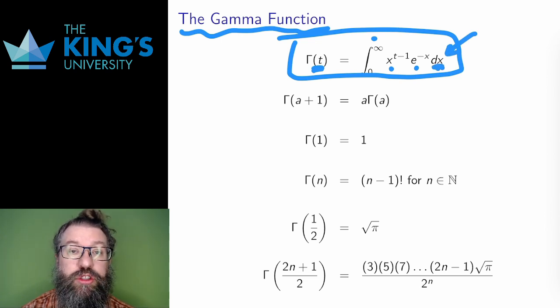The exponential decay ensures that this integral will converge regardless of t, but the larger t is, the larger the power of x is, which means that there's more area under the curve, so I expect the gamma function to be an increasing function in t.